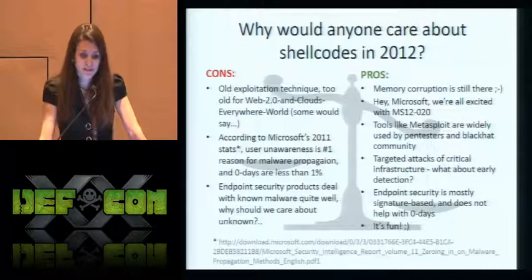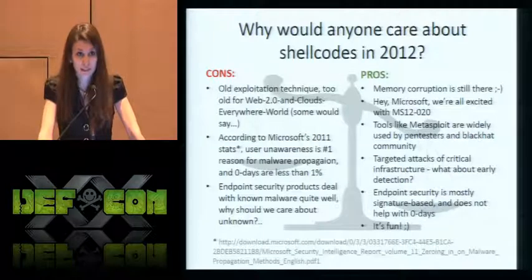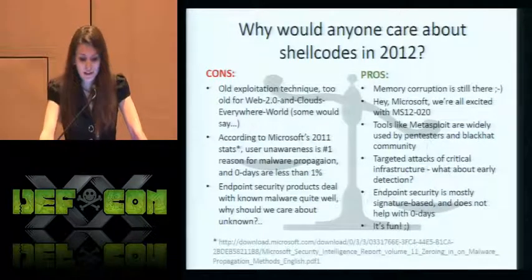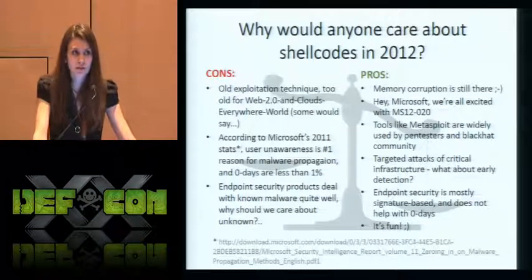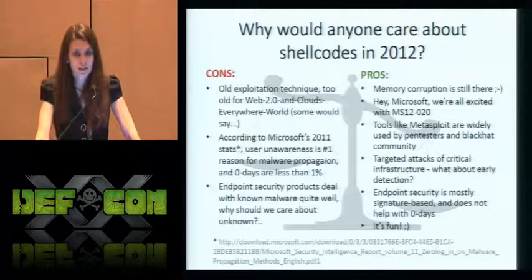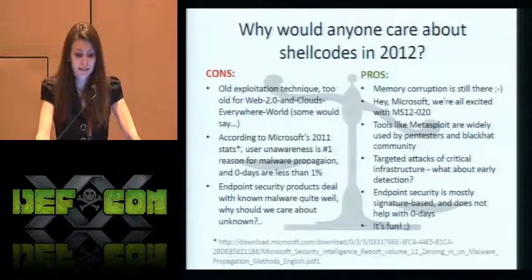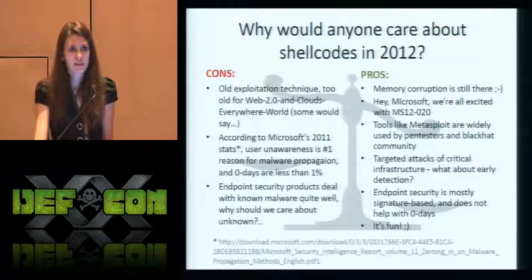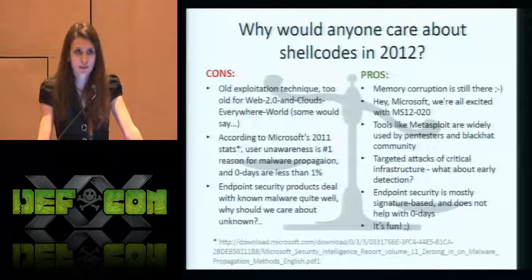But let's look at the other side of the coin. Memory corruption is still there. We still have a huge bunch of code written in C. Programmers still make mistakes, still introduce vulnerabilities in their products. We also know that tools like the Metasploit framework are widely used by black hat communities, scientists, and pentesters. And we shouldn't forget targeted attacks on critical infrastructure such as planes, trains, and water pumps — it's really serious and can lead to human victims.